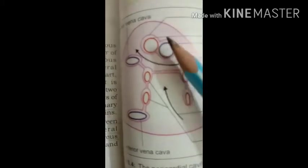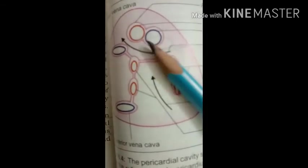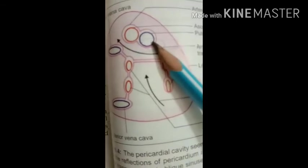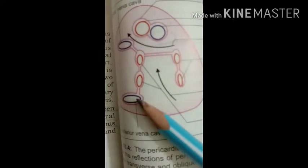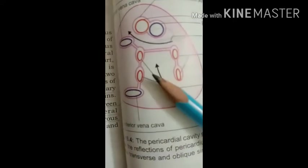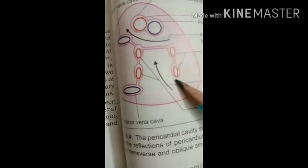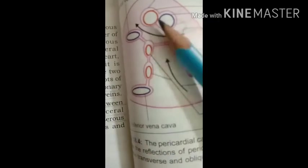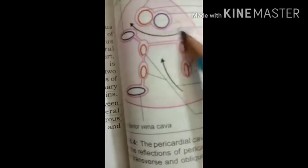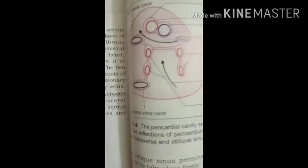Here you can see the ascending aorta and pulmonary trunk forming the arterial tube. The venous tube encloses the venae cavae — the superior vena cava and inferior vena cava — and the four pulmonary veins, two on the right side and two on the left. The passage between these two tubes is called the transverse sinus.